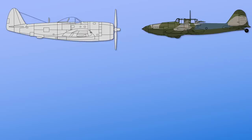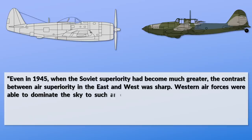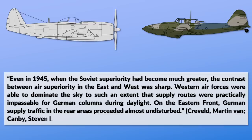Even in 1945, when Soviet superiority had become much greater, the contrast between air superiority in the East and West was sharp. Western air forces were able to dominate the sky to such an extent that supply routes were practically impassable for German columns during daylight.